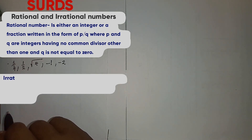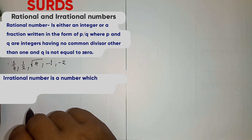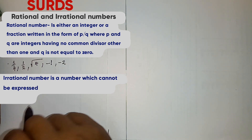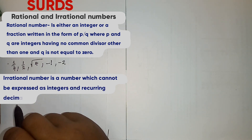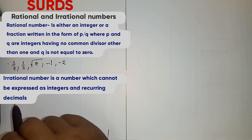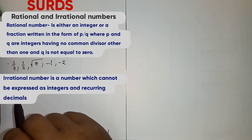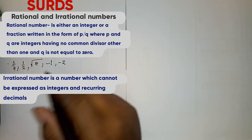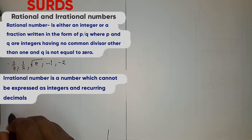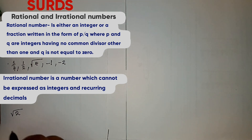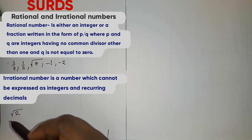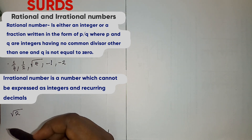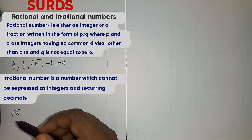Let us now move to irrational numbers. What is an irrational number? An irrational number is a number that cannot be expressed as an integer, a recurring decimal, or a terminating decimal. For example, we have root 2. Root 2 is irrational because it is not a terminating decimal, neither is it a recurring decimal.